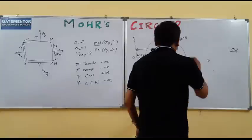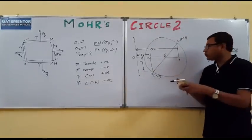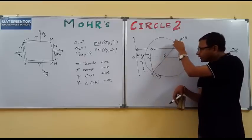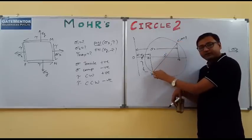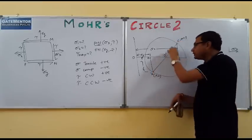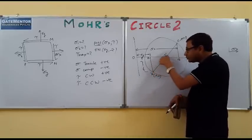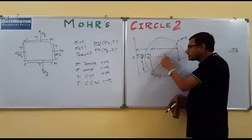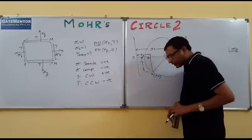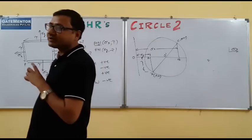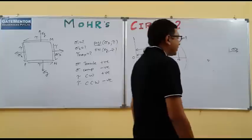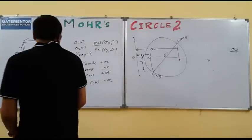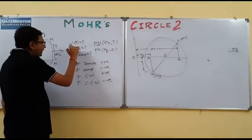I now have two points C and D. Since C and D are both points on the Mohr's circle, I can join line CD — this line is the diameter of the Mohr's circle. From this diameter I can now draw the complete Mohr's circle, and then calculate sigma 1 and sigma 2.